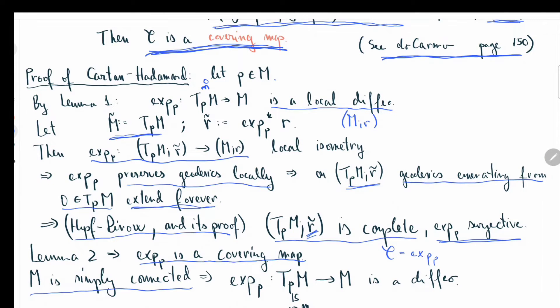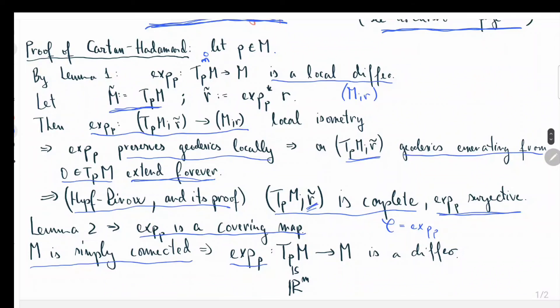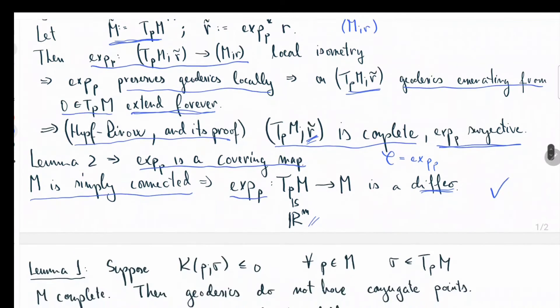But M, by the statement of the Cartan-Hadamard theorem, was simply connected. So this means that the exponential map is not just a covering map, it actually has to be a diffeomorphism. Now T_p M is a copy of R^m, so this proves the Cartan-Hadamard theorem. What's left to argue is lemma 1, so let me give you the argument for that.